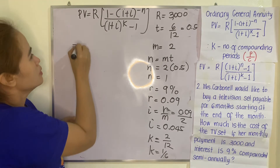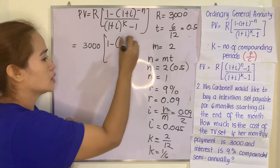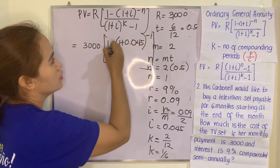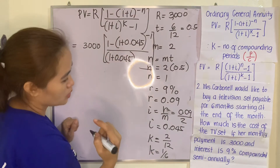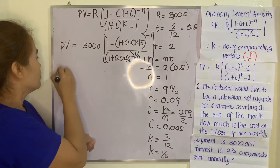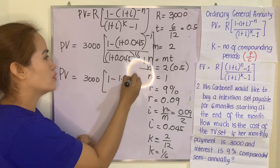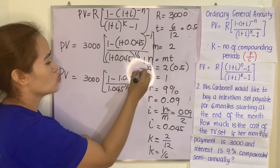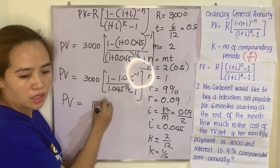Substituting: PV equals 3,000 multiplied by (1 minus (1 plus 0.045) raised to negative 1), divided by ((1 plus 0.045) raised to 1/6 minus 1). The present value of the television set is 17,500.